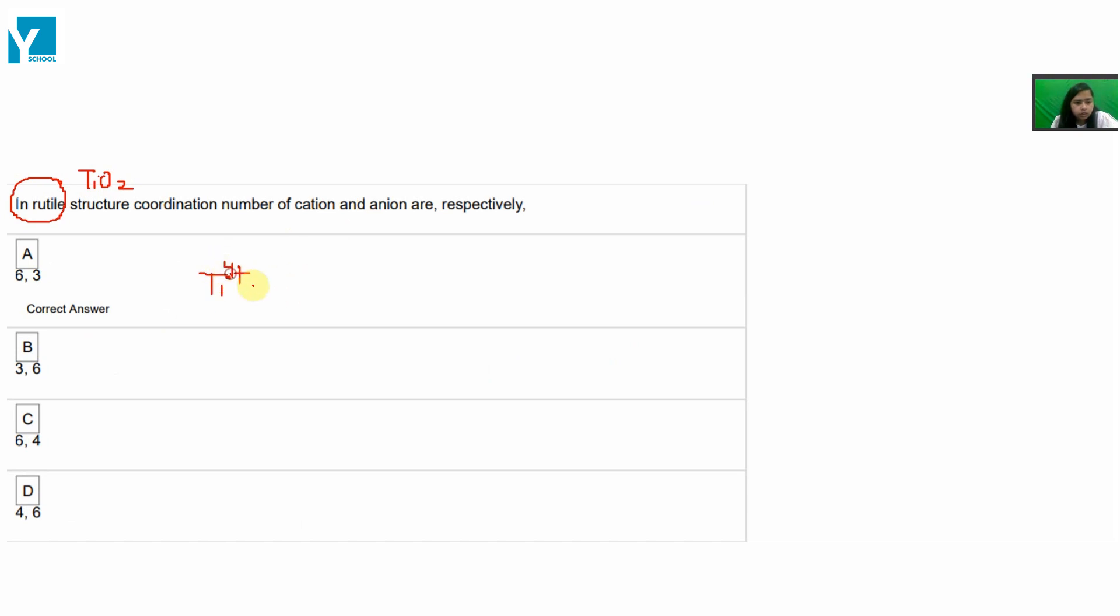Ti positive ions are present in the structure and they are surrounded by 6 O2 negative ions. It's around 6 O2 negative ions, this type of octahedral present.